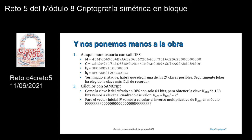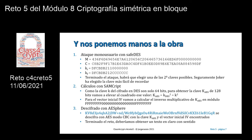Una vez que tenemos ya la clave del algoritmo AES y ese vector inicial, vamos a realizar el descifrado con el software AESphere. Introducimos el texto en base 64 y se descifra con el software AESphere en modo CBC, con la clave AES y el vector inicial IV. Terminado el reto, deberíamos obtener un texto en claro con sentido.